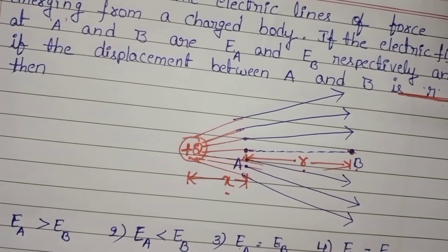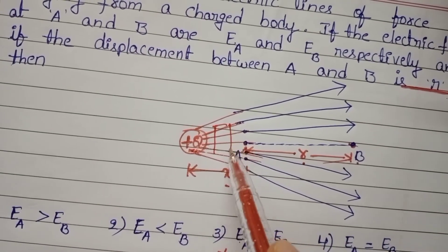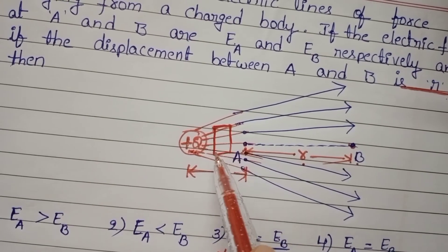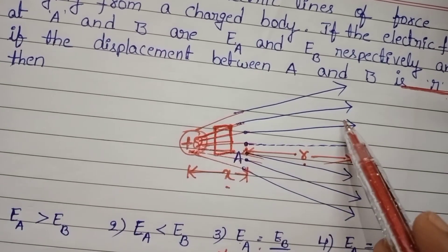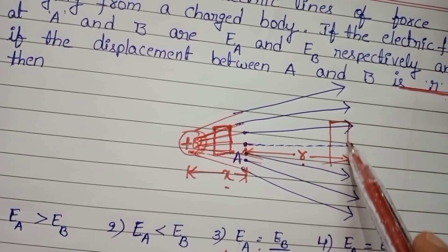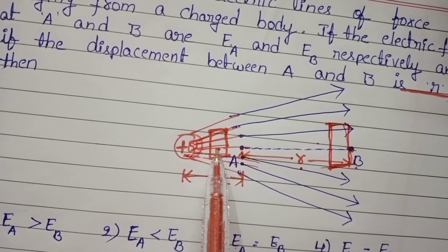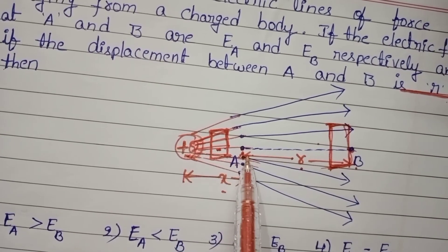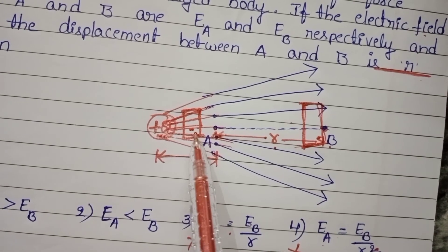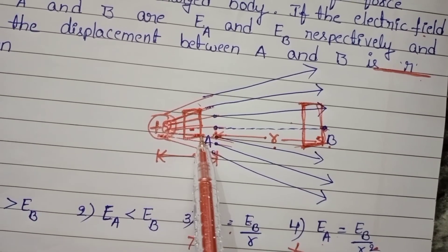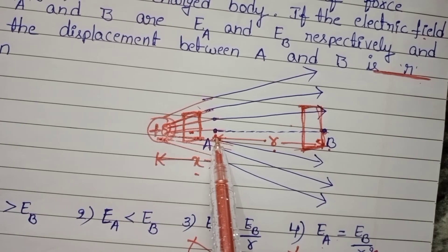Observe the diagram. From charge Q to point A, take a region and check the density — the number of field lines through that area. Take the same region at point B and check the number of lines passing through it. Where the number of field lines is more crowded is at point A. The density at A is more and at B is less, so the number of field lines at point A is greater than at point B.